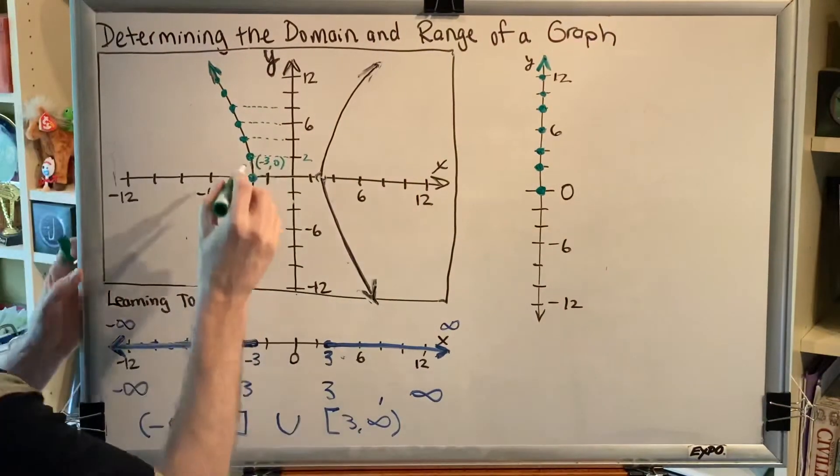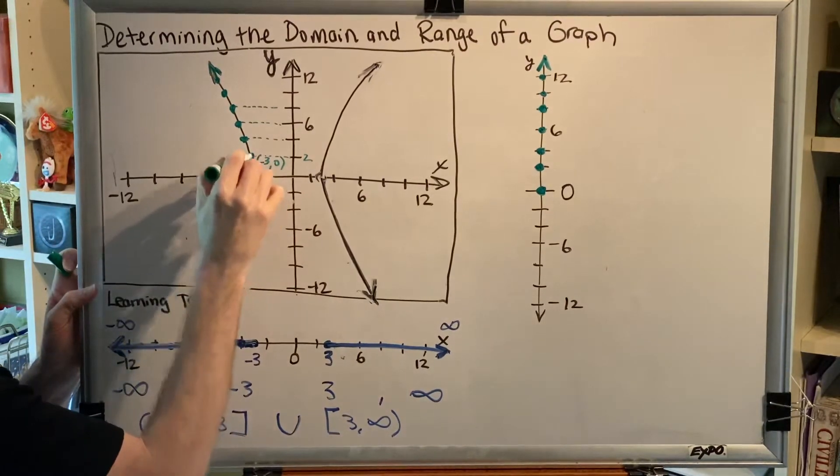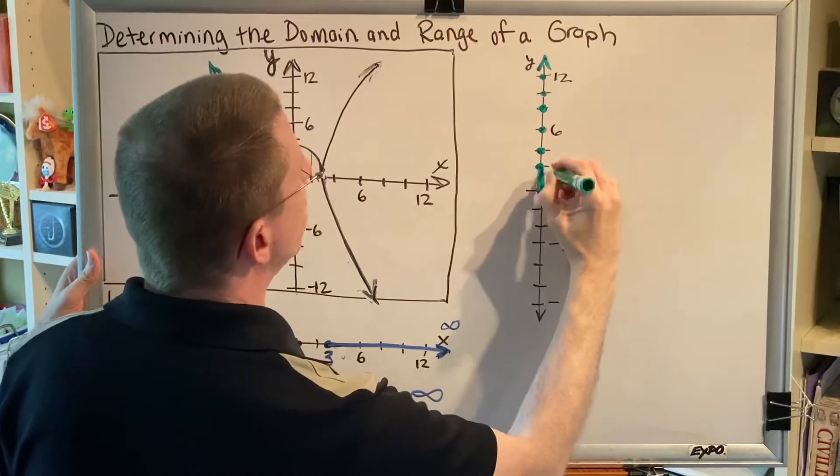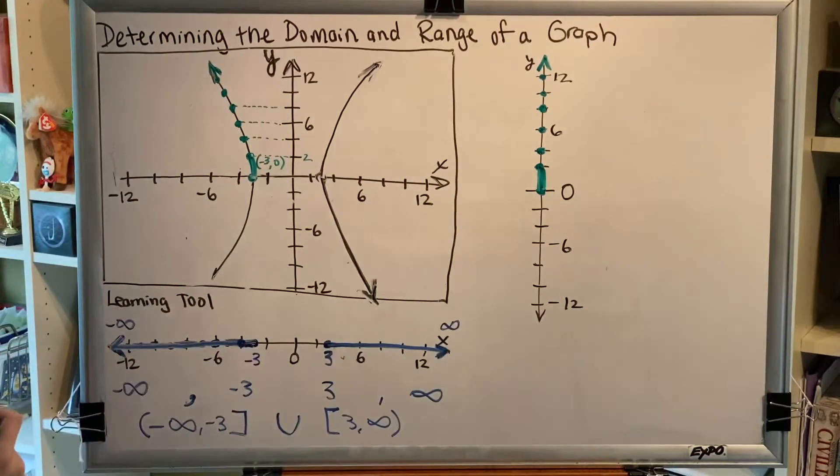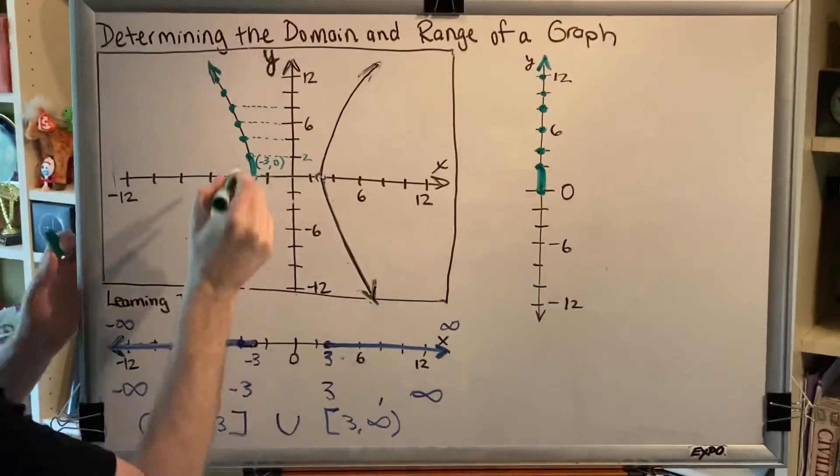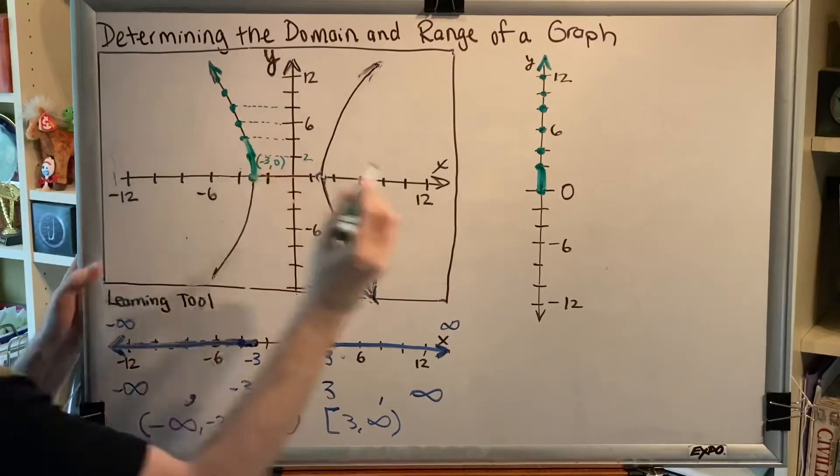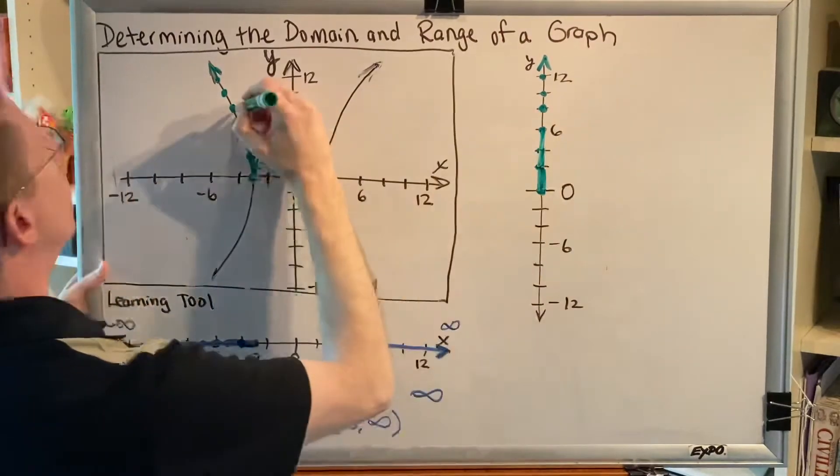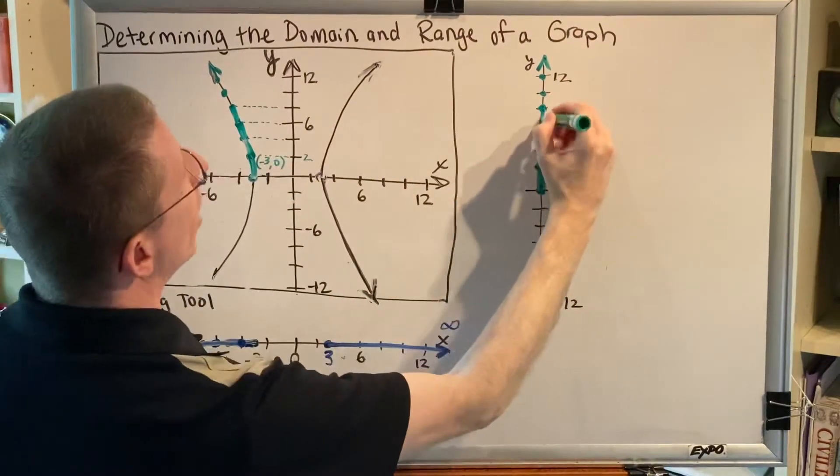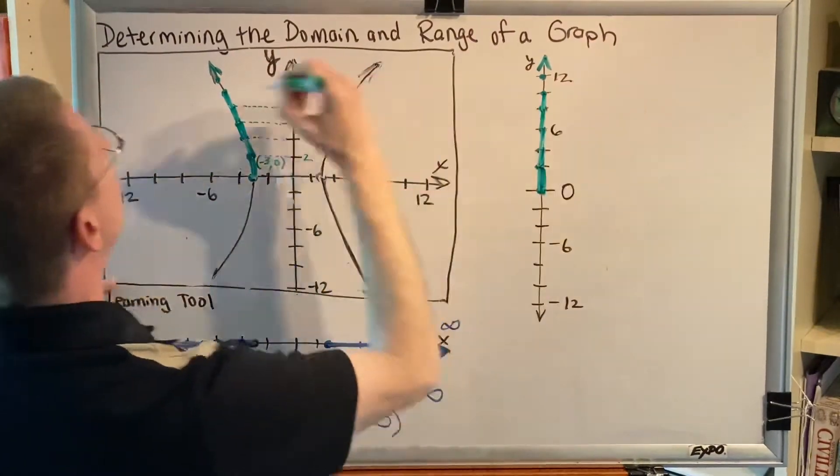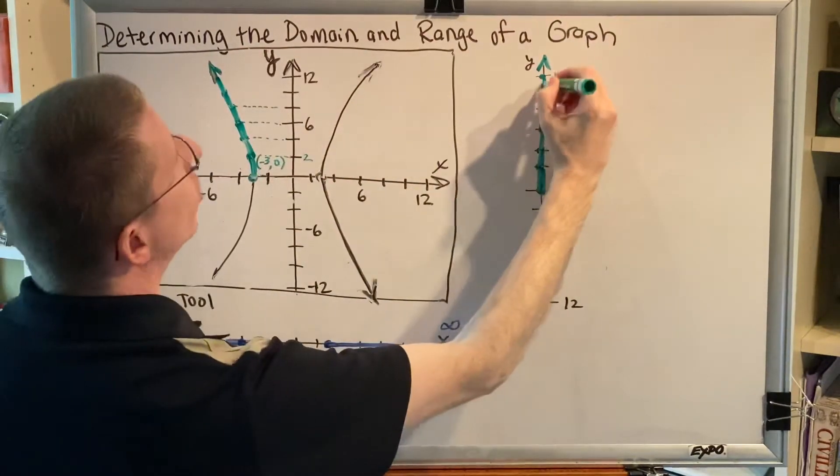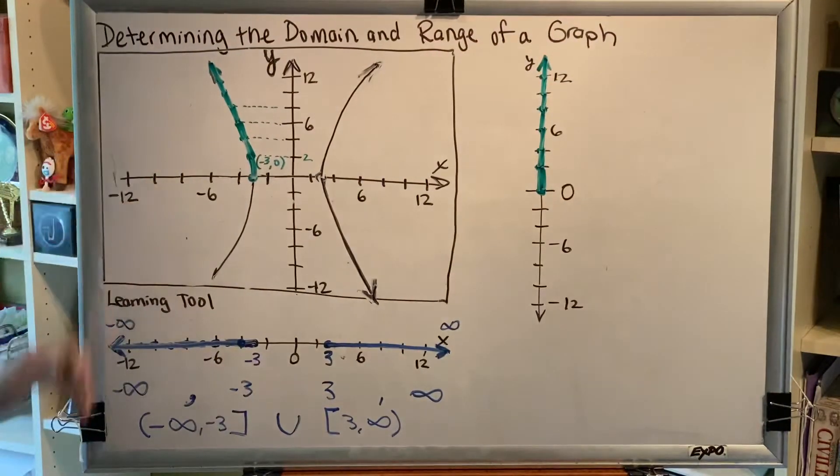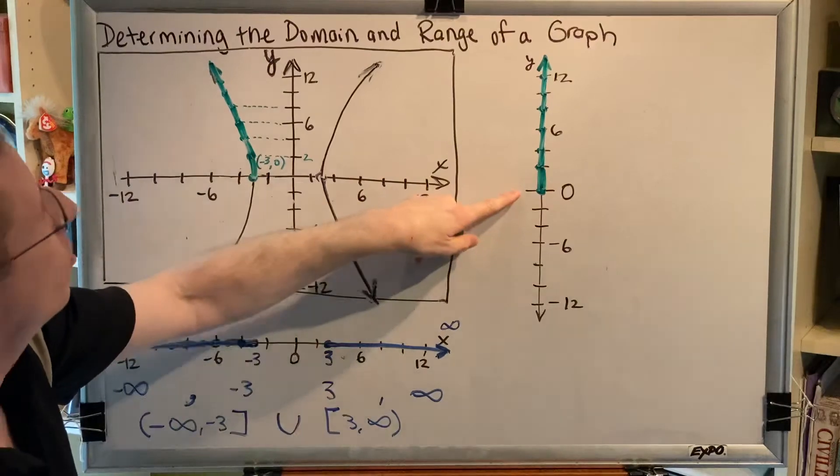In other words, all of the values between zero and two are included, so we're going to shade all of the values between zero and two over here as well. The same thing is true for all of these. Between two and four we shade, between four and six we shade, between six and eight, between eight and ten, between ten and twelve, and onwards towards positive infinity.